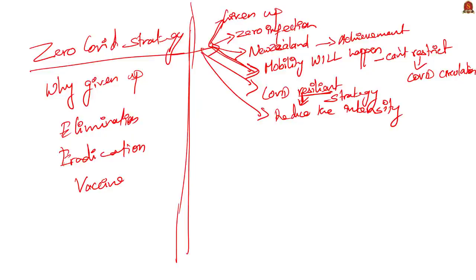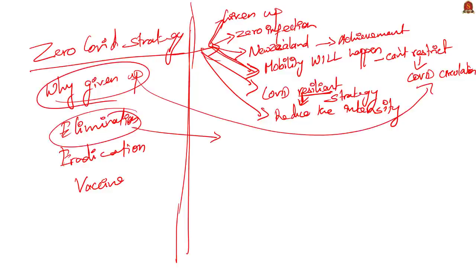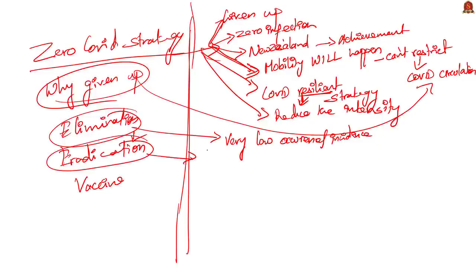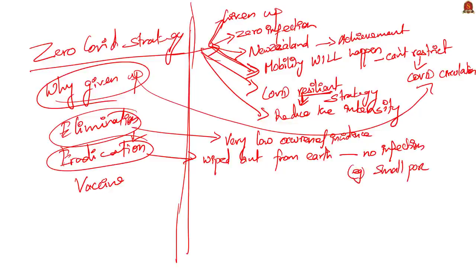Because a country cannot eliminate or eradicate COVID, people have shifted to COVID resilience strategy. Let us see what eradication and elimination mean. Elimination means a disease has very low incidence in the population — it is eliminated from the particular geographic area. Eradication means the particular infection and its pathogen are not present anywhere on earth at all — no one will be infected by that disease again. We have already eradicated smallpox. Coming to COVID, there is no question of elimination and therefore no question of eradication, so countries have shifted to the COVID resilience strategy.